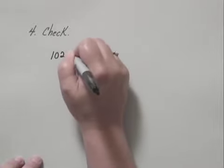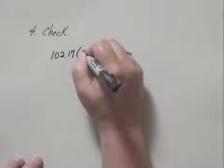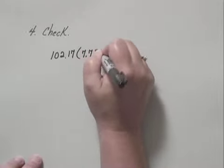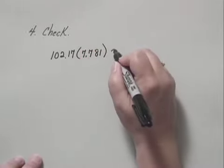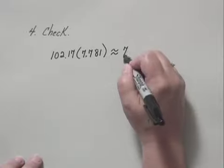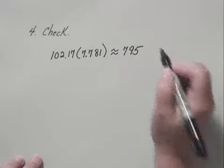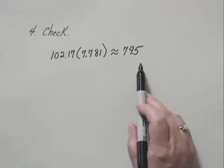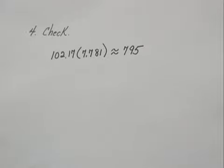Multiply that by the 7.781. And we multiply that does equal approximately $795. And this would be the Hong Kong dollar price. So the answer does check.